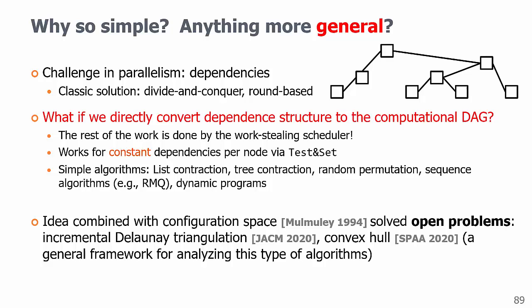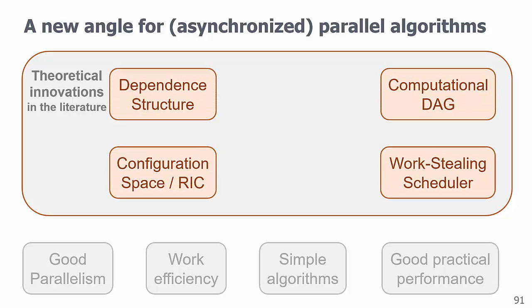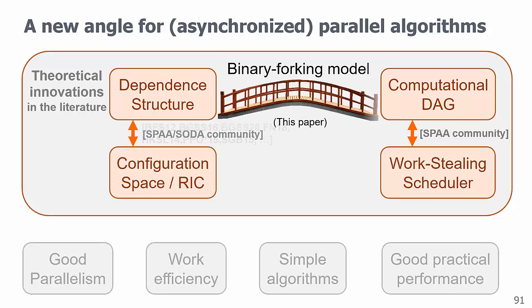In a bigger picture, we have these theoretical innovations in the literature for quite a while, although we still don't have simple and efficient parallel algorithms for many problems. The work stealing scheduler, which is a key research progress in our community over the past decades, provides a simple solution to convert a computational DAG into real parallel execution. The relationship between configuration space and dependent structure has been studied extensively as well. In this paper,